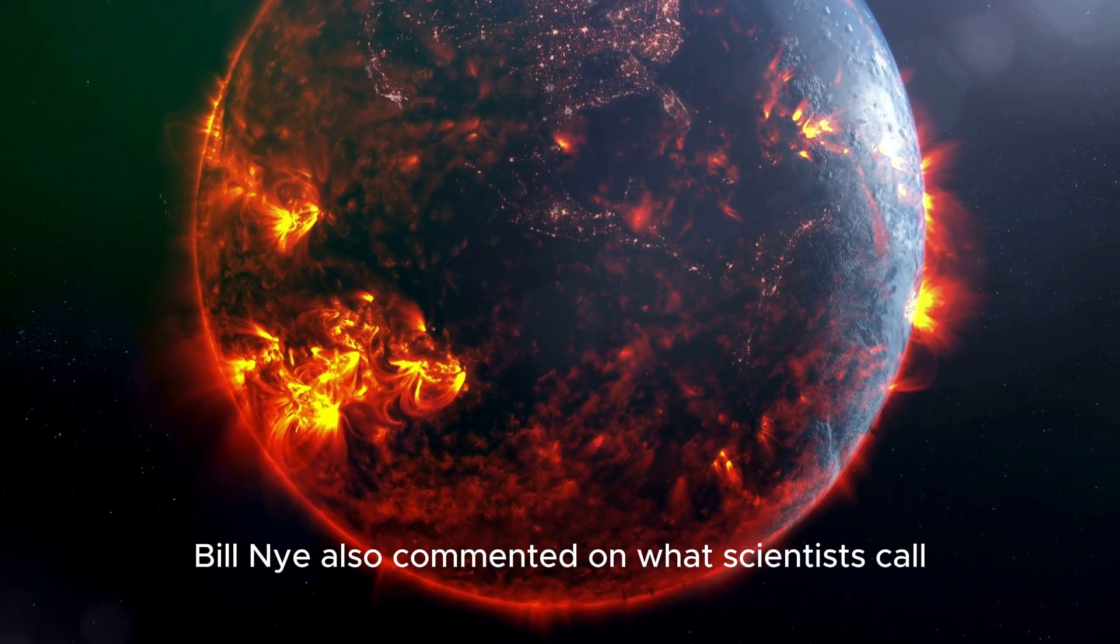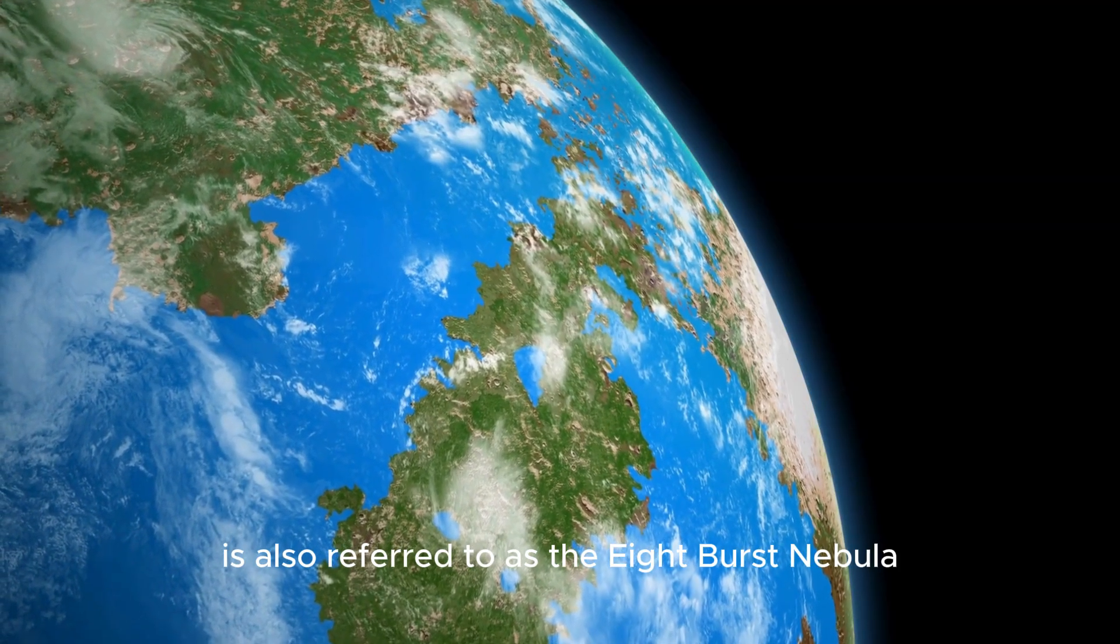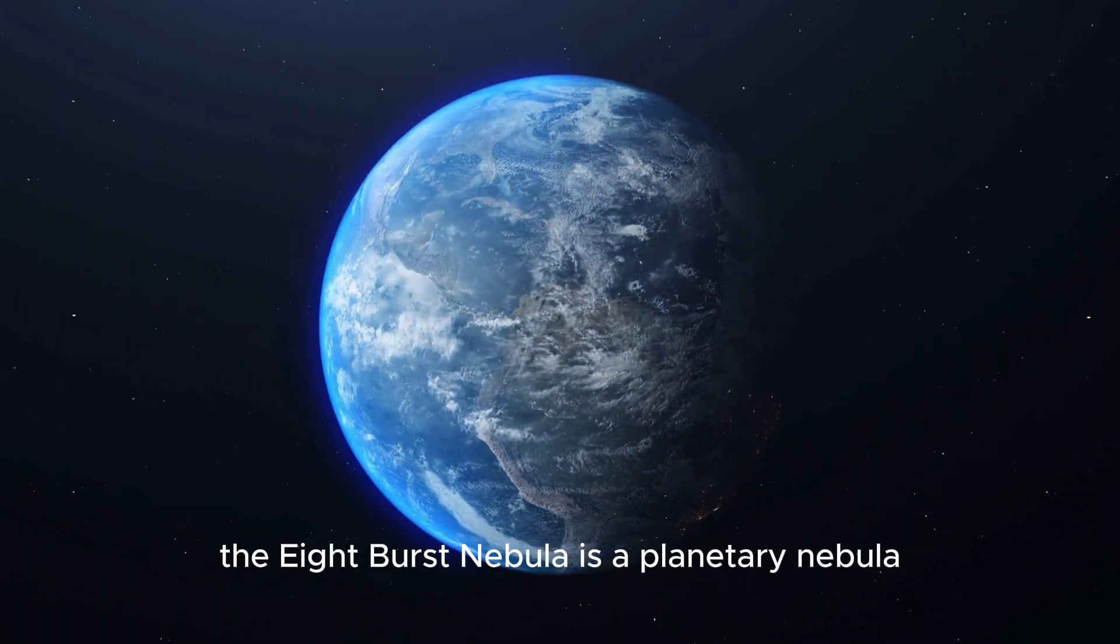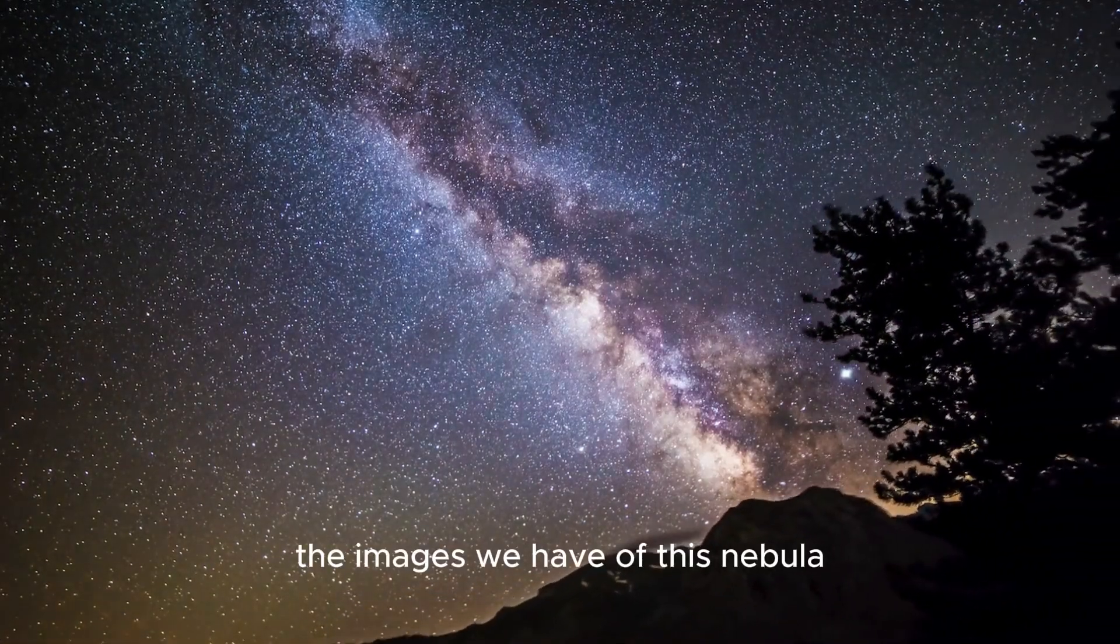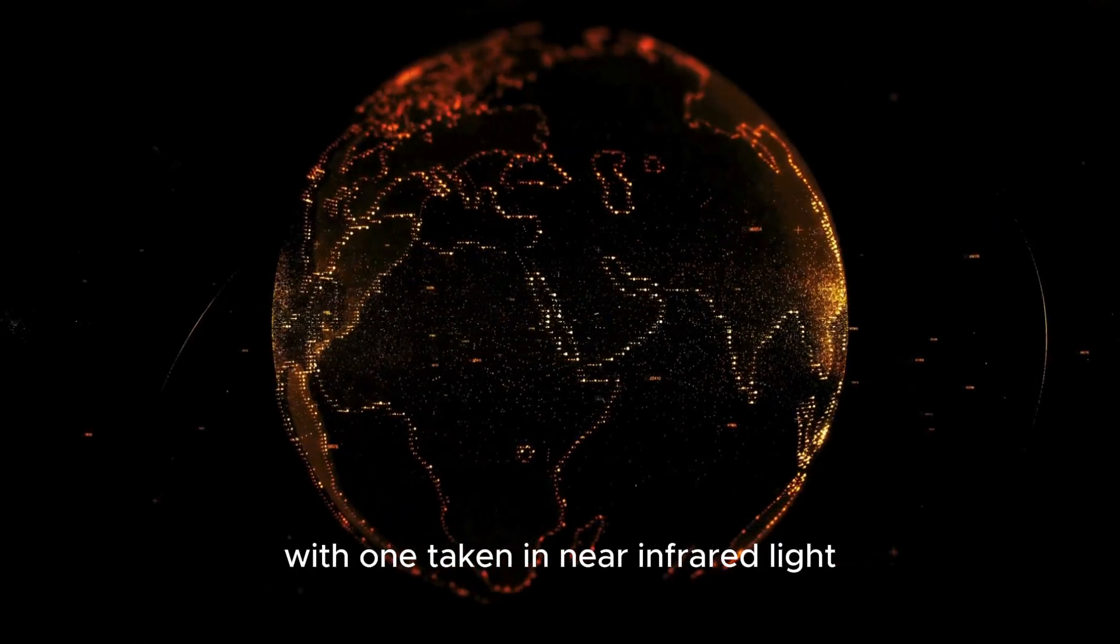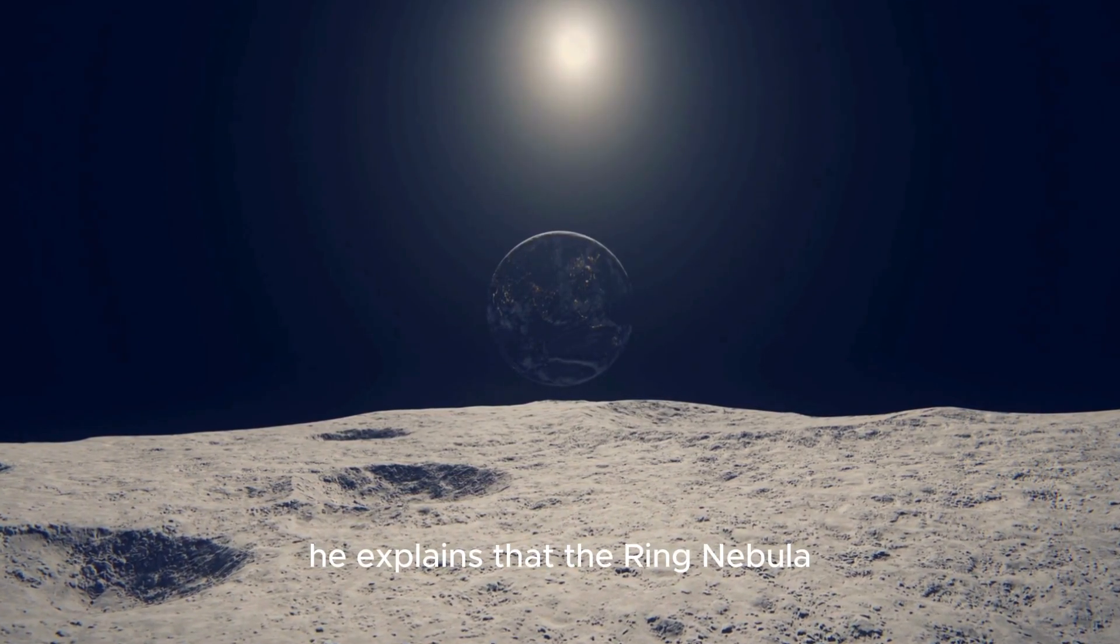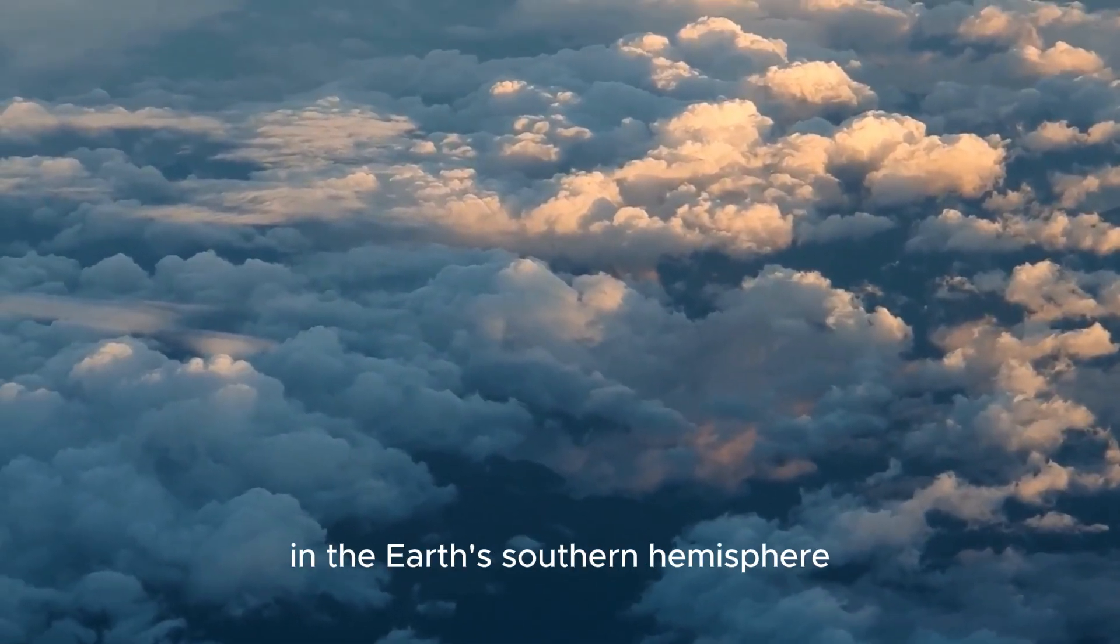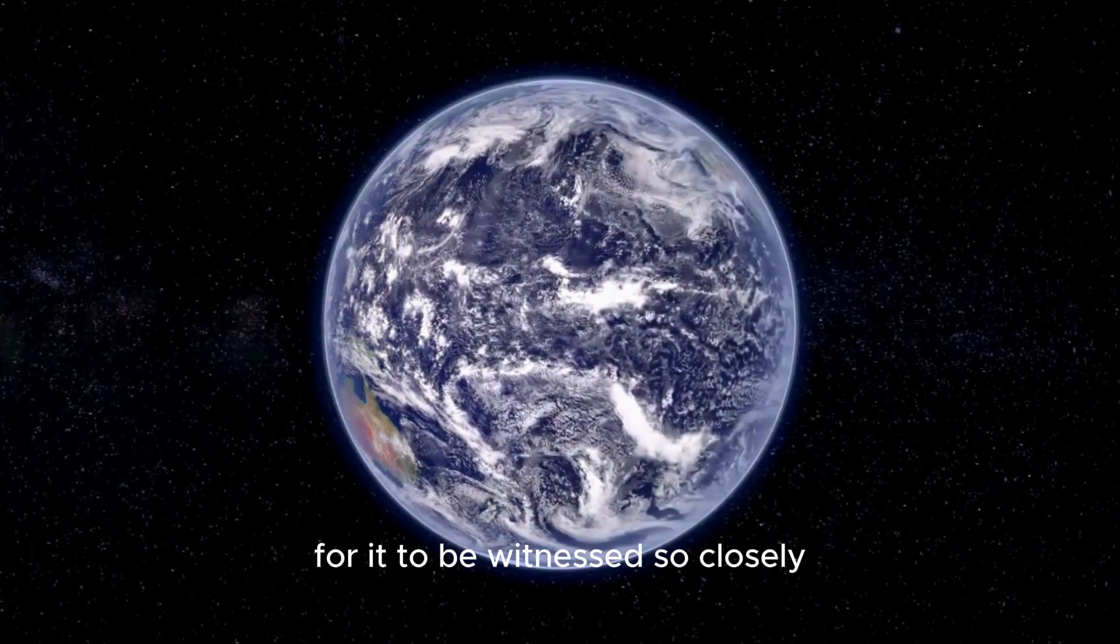Bill Nye also commented on what scientists call the Southern Ring Nebula. This nebula is also referred to as the Eight-Burst Nebula. The Eight-Burst Nebula is a planetary nebula located about 2,000 light-years away from Earth. The images we have of this nebula were also captured by NASA's James Webb Telescope, with one taken in near-infrared light and the other in mid-infrared light. He explains that the Ring Nebula, with its fascinating name, can be observed by astronomers in the Earth's southern hemisphere. It provides a rare opportunity for it to be witnessed so closely.